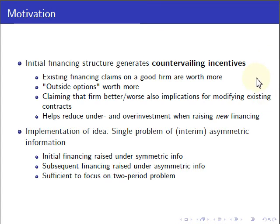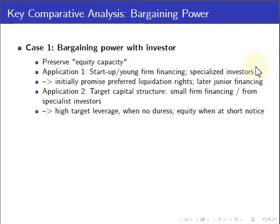Our implementation idea for how to implement this concept of countervailing incentives is actually very simple. It is sufficient to look at a two-period problem where the initial financing stage is raised under symmetric information, and then the later round financing is raised under asymmetric information. By solving this model, our key comparative analysis is basically to vary the bargaining power at the interim stage. We focus on two cases: in the first, the bargaining power is with the initial investors or the new investors providing the new round of financing. We also look at the opposite case where the bargaining power is rather in the hands of the management, even when forced to raise capital under asymmetric information — which is actually the case most often modeled in the literature.